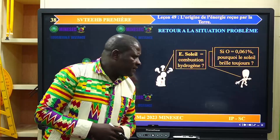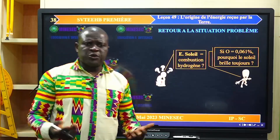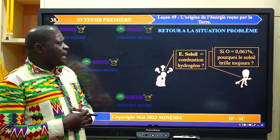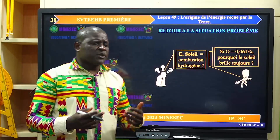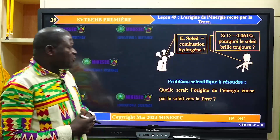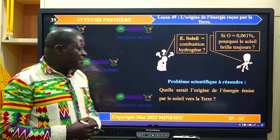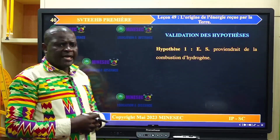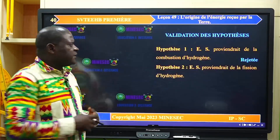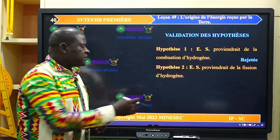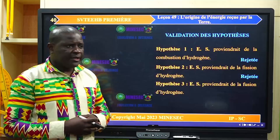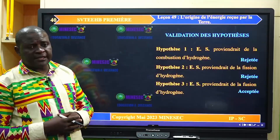Revenons à la situation problème pour laquelle nous avions deux camarades : l'un se disait que l'énergie du soleil proviendrait de la combustion des noyaux d'hydrogène, et son camarade n'était pas d'accord, puisque avec seulement 0,061% d'oxygène dans le cœur du soleil, le soleil ne brillerait pas jusqu'à nos jours. Nous avions trois hypothèses : la combustion d'hydrogène — à rejeter, la fission d'hydrogène — à rejeter, et la fusion thermonucléaire des noyaux d'hydrogène — hypothèse acceptée, correspondant aux réactions thermonucléaires.